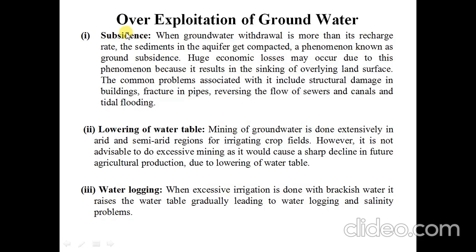The next point is the over-exploitation of groundwater. The first point is subsidence. When groundwater withdrawal is more than its recharge rate, the sediment of an aquifer gets compacted — this phenomenon is known as ground subsidence. Hence, huge economic losses may occur because it results in the sinking of the overlying land surface. Common problems associated with it include structural damage to buildings, fractures in pipes, reversal of flow in sewers and canals, and tidal flooding.